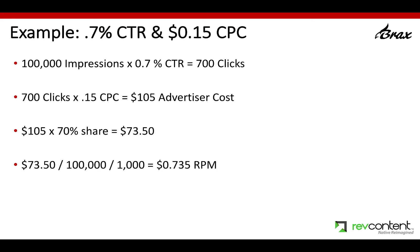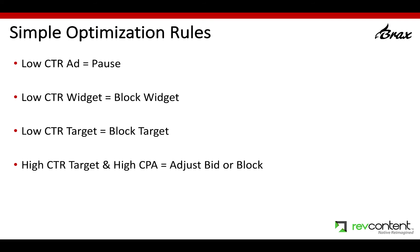Really, the higher your CTR, the lower you're going to be able to bid, because that's how publishers are making money. Next, I want to talk about some simple optimization rules. First, if your ad has a low CTR, just pause it and create a new one. Same thing — if you go look at your widgets and there are widgets with low CTR, just block those widgets for that specific campaign, because you're trying at the campaign level to get your campaign CTR as high as possible.